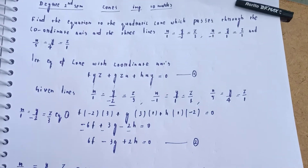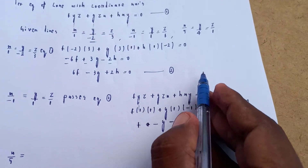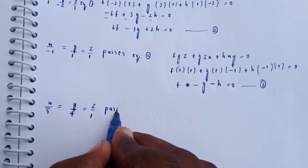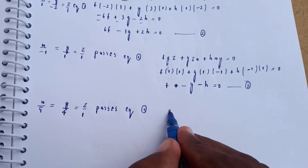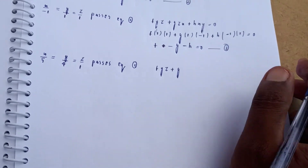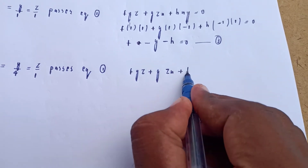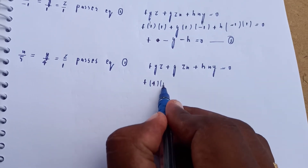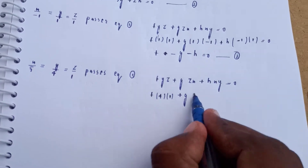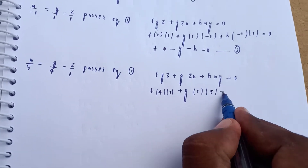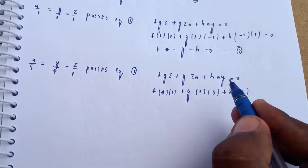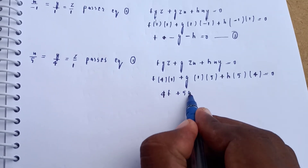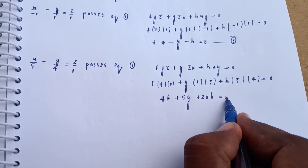The third line x/5 = y/4 = z/1 passes through equation number 1: f·yz + g·zx + h·xy = 0. Substituting direction ratios (5, 4, 1): f·(4)(1) + g·(1)(5) + h·(5)(4) = 0, giving 4f + 5g + 20h = 0. This is equation number 4.